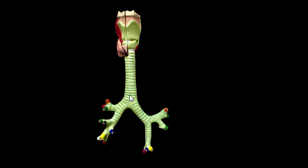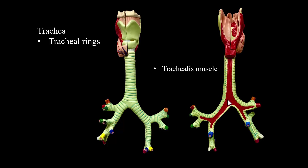Looking at the trachea, it runs from the larynx down to where it splits. You can see the tracheal rings, which are made of hyaline cartilage. They provide flexibility and rigidity, with membrane in between allowing for rotation. The hyaline cartilage rings keep the trachea from collapsing. Looking at the posterior view, we can see the trachealis muscle, and that these tracheal rings are actually C-shaped. The trachealis muscle holds the rings together and allows the opening of the trachea to constrict or open as needed.